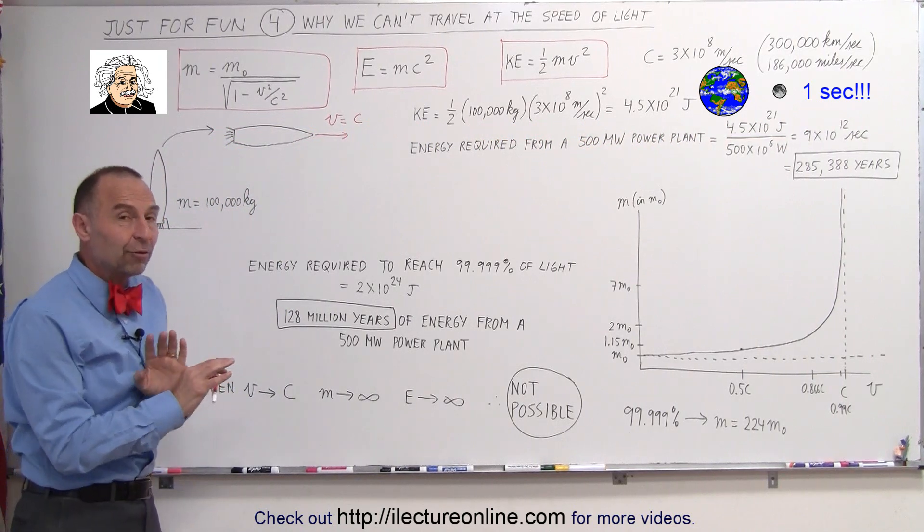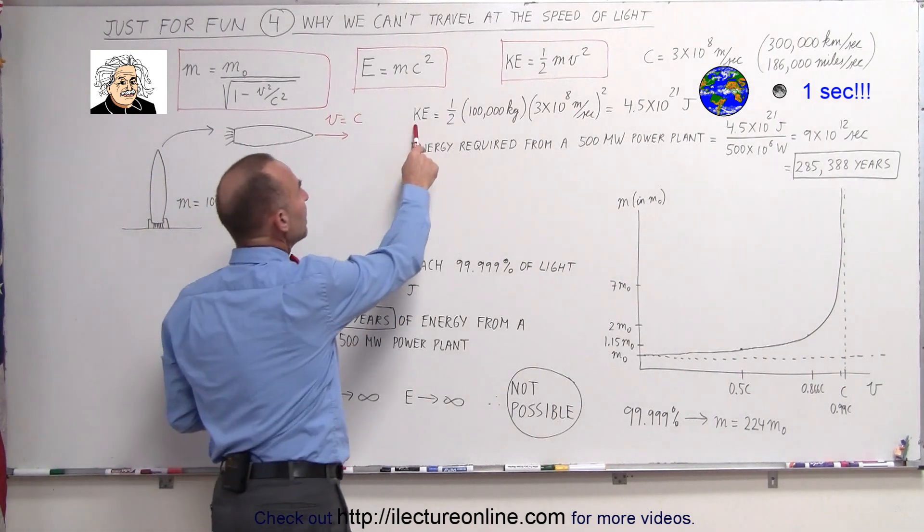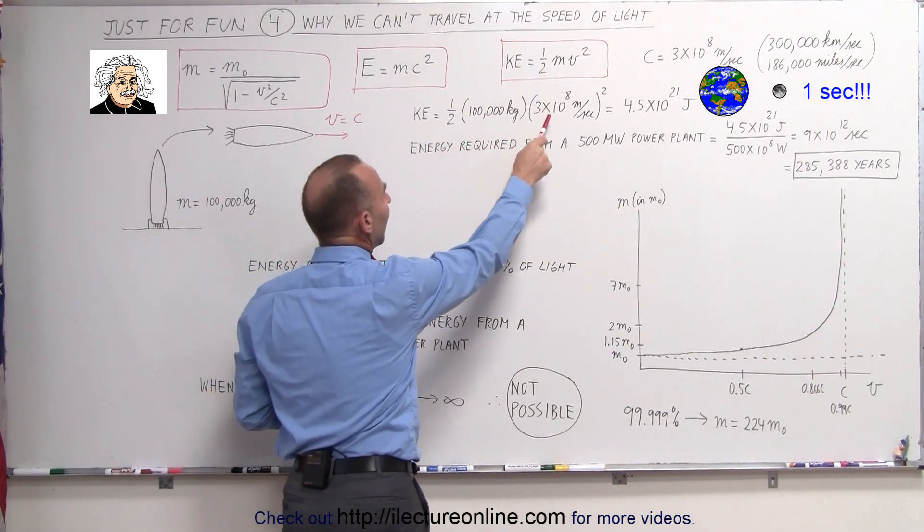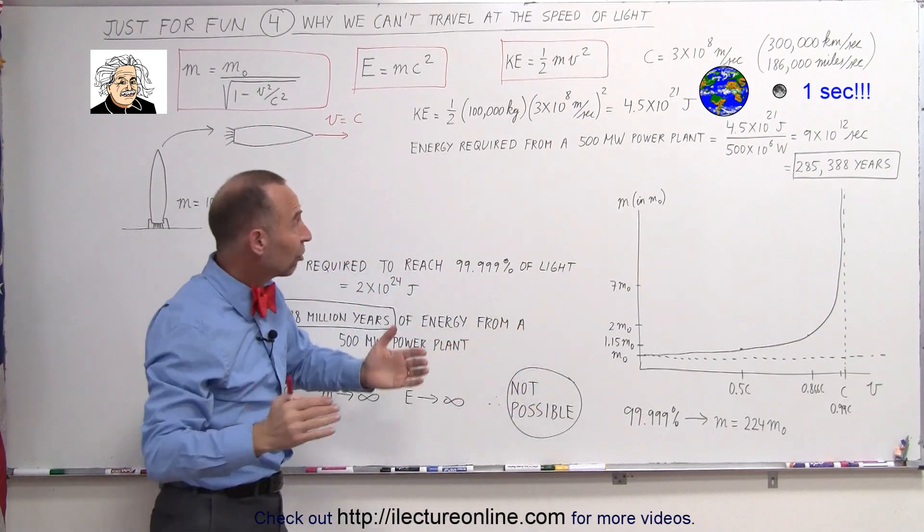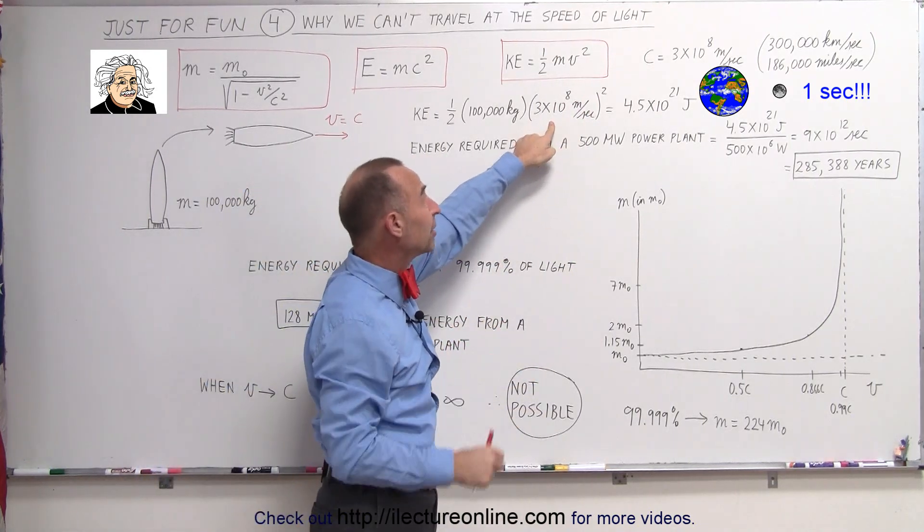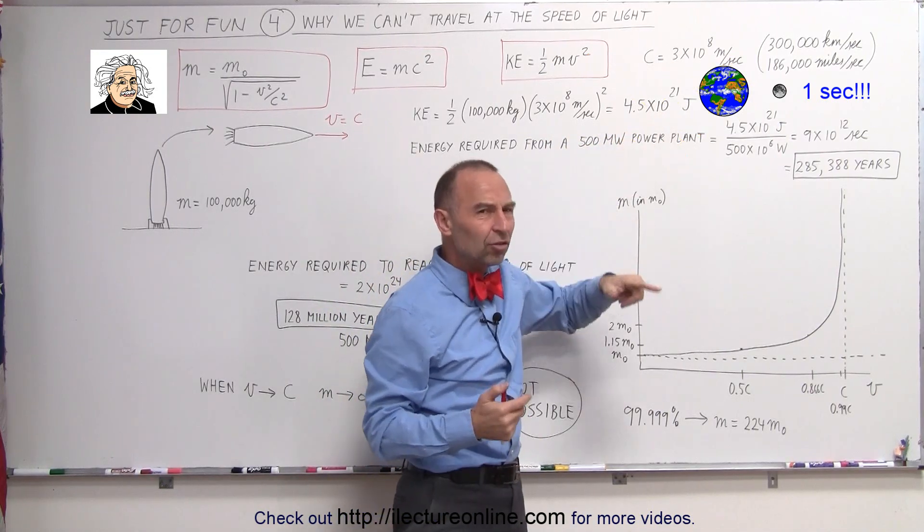Well, that takes a lot of energy, even if we ignore all the relativistic effects. The amount of energy that we need is one-half the mass times the velocity squared. And since C is the velocity, the speed of light is such a large velocity, when we square it, we get a really big number. We would need this much energy. Wow. How much energy is that?